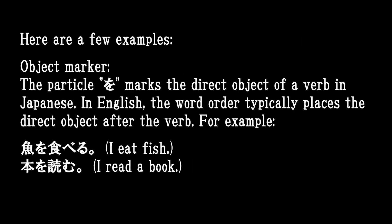Object Marker: The particle O marks the direct object of a verb in Japanese. In English, the word order typically places the direct object after the verb. For example: I eat fish; I read a book. In Japanese: 魚を食べる, 本を読む.